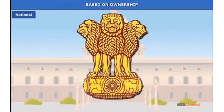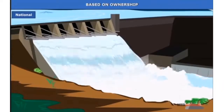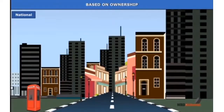National resources are owned by the government. In the past, all land, water, and other natural resources were considered to be owned by the king, emperor, or ruler. Even today, the government owns resources for general public use, such as railways, irrigation canals, roads, and buildings. International resources are owned by international institutions like the United Nations or other regional international organizations.